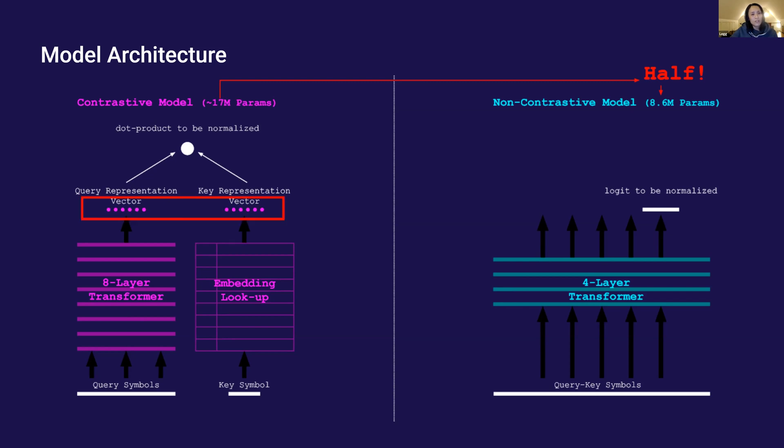My experiment goal is to show that contrastive models with limited vector representation dimensions are worse than non-contrastive models that use half the parameters.